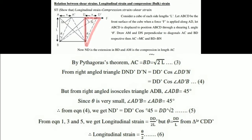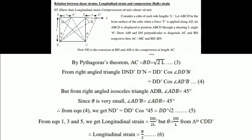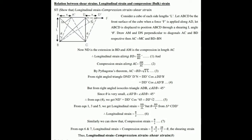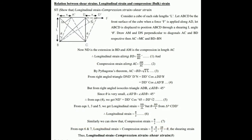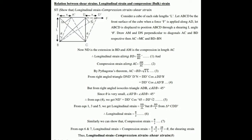From triangle CDD', we already know theta equals DD' divided by l. Substituting, longitudinal strain equals theta divided by 2, taken as equation 6. Similarly, compression strain also equals theta divided by 2, taken as equation 7. From equations 6 and 7, longitudinal strain plus compression strain equals theta, which is the shearing strain. This completes Derivation 1, which may be asked for 8 or 10 marks in the semester exam.